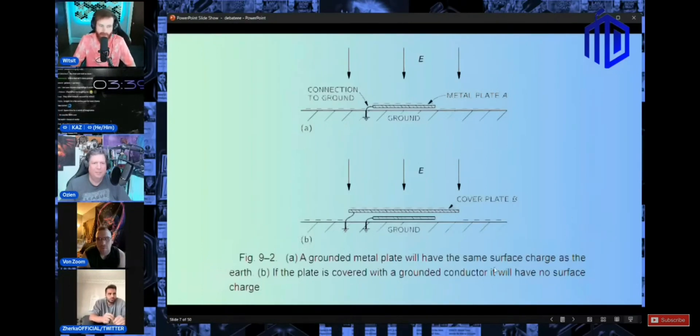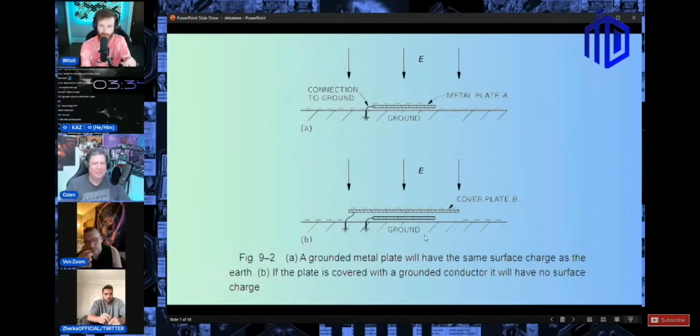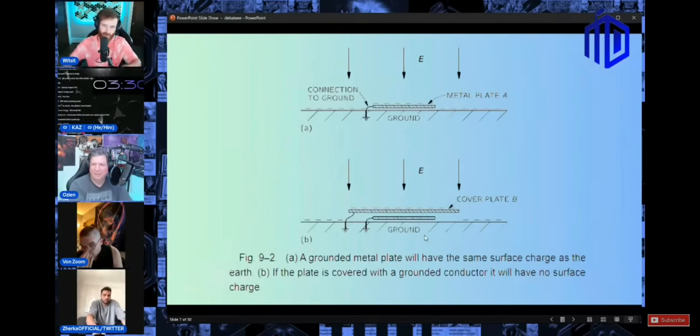A grounded metal plate will have the same surface charge as the earth. The plate covered with the ground conductor will have no surface charge. In the next level movie, Level with Me Film dot com, we actually did the experiment to show you can make things go up and down manipulating electrostatics.